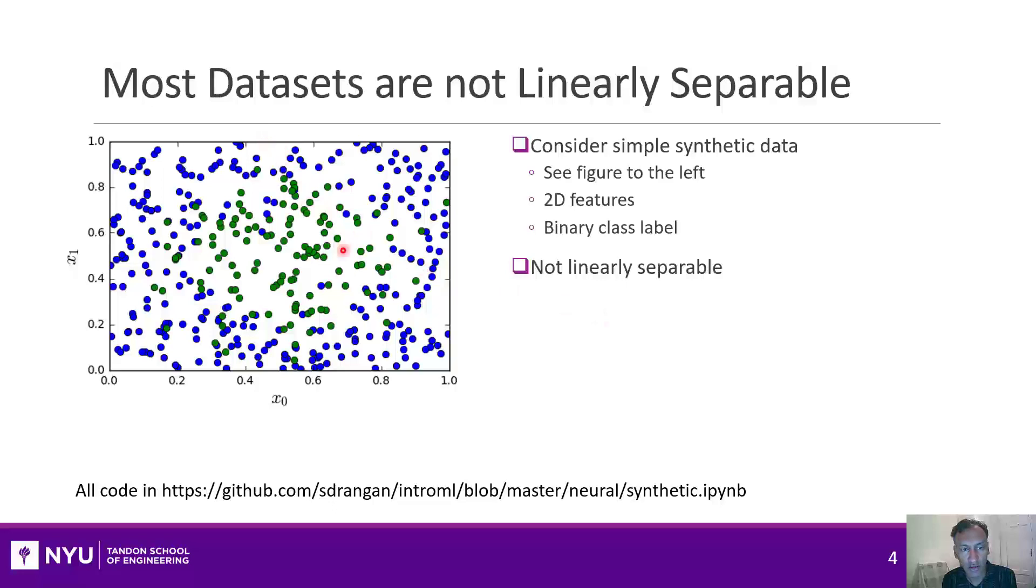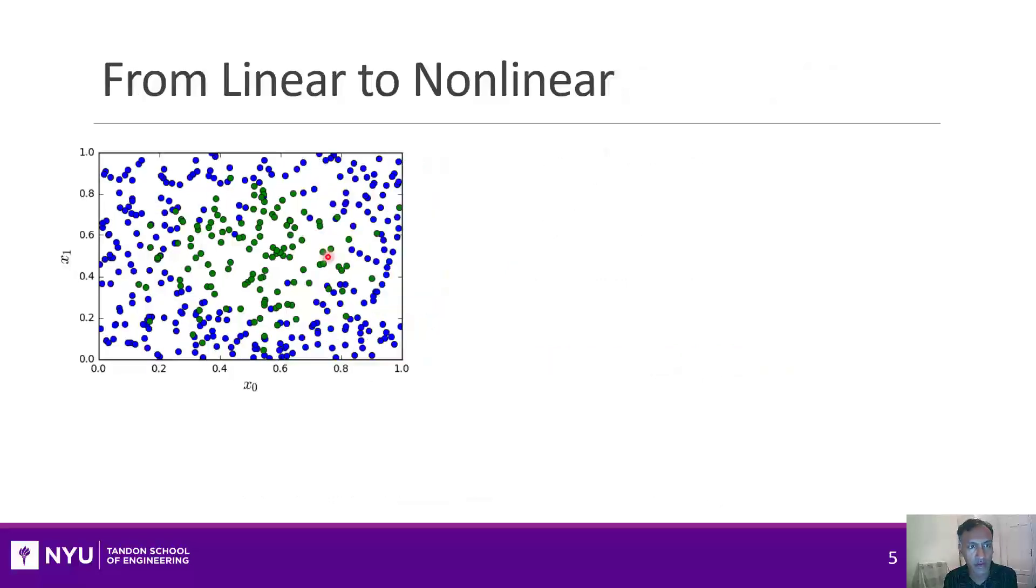If you try to draw any line, there's no way that you can separate the green and blue samples well. So obviously we need a better classifier, or more specifically we need a non-linear classifier.